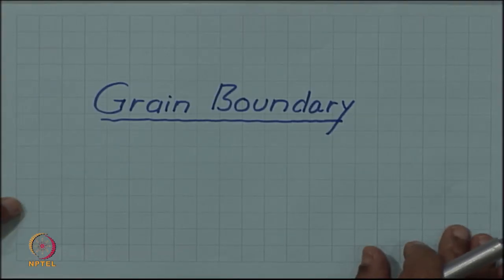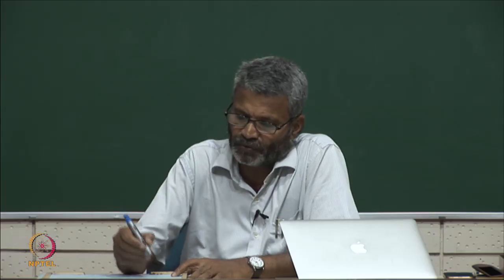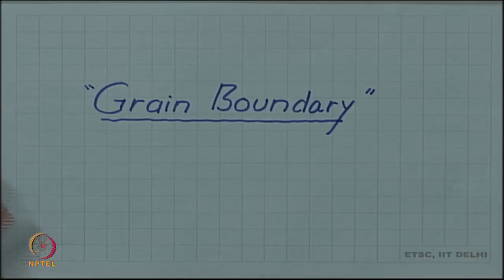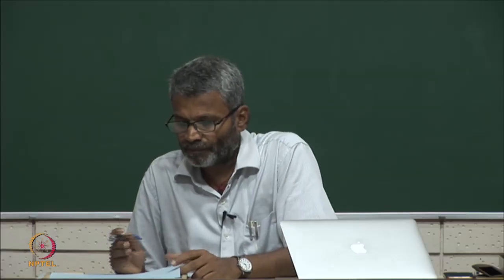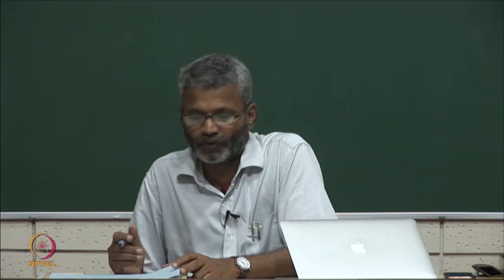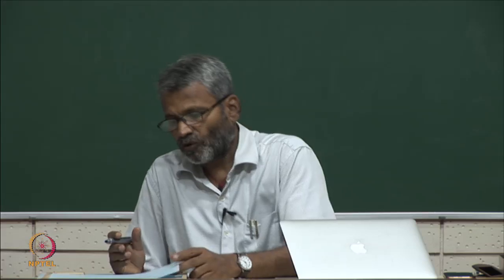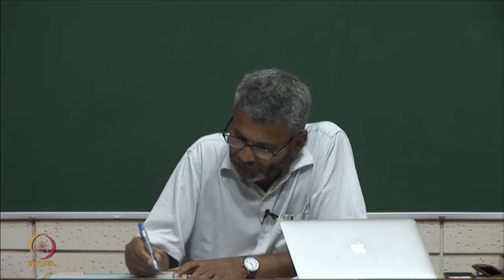We continue our discussion on two dimensional surface defects, and one of the important two dimensional surface defects are the grain boundary. Grain boundaries are internal boundaries inside a crystal, and we have already met them while discussing dislocations, because we said that dislocations inside a crystal can end on a grain boundary. So, a grain boundary is also one of the locations where a dislocation can end.